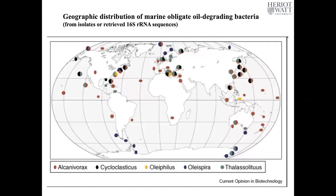So where do we find these obligate oil degrading bacteria? With some exceptions, essentially everywhere. This map, though a bit outdated, shows where to find these organisms — they are essentially all over the world; they are what we call ubiquitous. There are some large areas, mainly open ocean sites like the Indian Ocean, the South Atlantic, the North Atlantic, and the Pacific where you don't see colored dots. The reason is simply that no one has looked for them there — research cruises are expensive and rarely venture far from coasts. But if we were to sample those open ocean sites, we would definitely find oil degraders there.